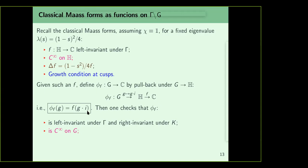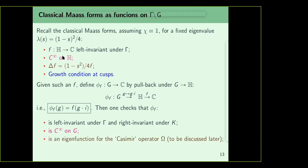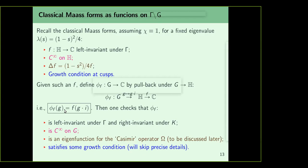φ_f is C-infinity on G. The third property — that delta f = (1-s²/4)f — translates to the statement that the pullback is an eigenfunction for the Casimir operator, which I'll discuss later. Now we want to make similar conditions for more general Maass forms, and associate φ_f to every holomorphic form as well as a more general Maass form in A_k(Gamma_0(N), trivial character, s).